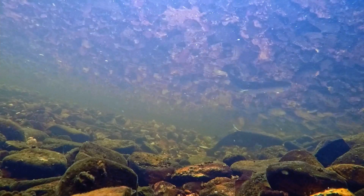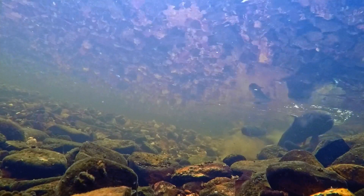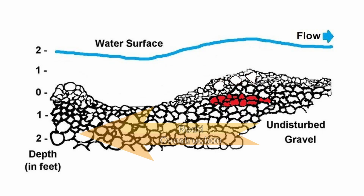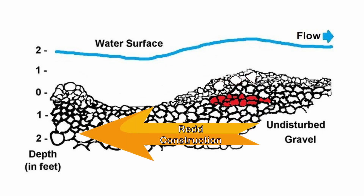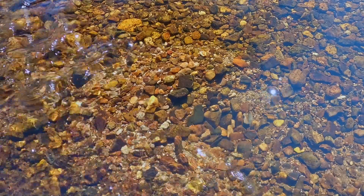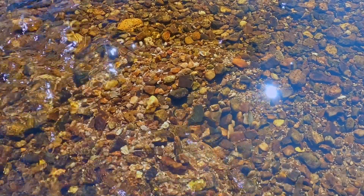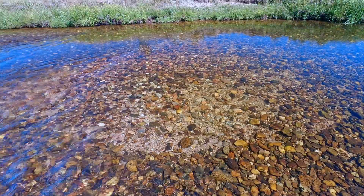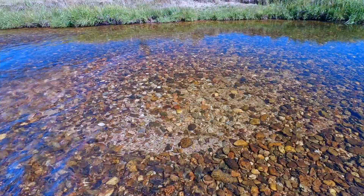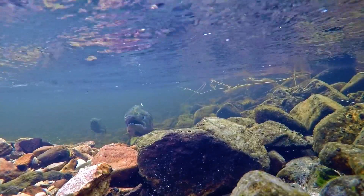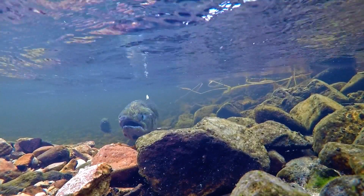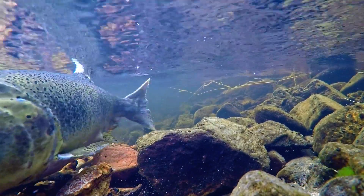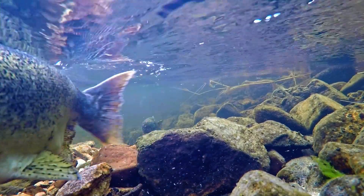A female salmon constructs a red by using her tail to remove and place substrate. Red construction progresses in an upstream direction. Salmon test the site's suitability by digging a pit. If the substrate is appropriate, they will continue to construct a red; if not, they will abandon it. Such primitive sites can be interpreted in two ways: as an abandoned test, or as a red in progress — also known as an RIP.